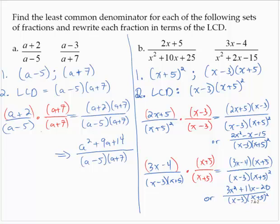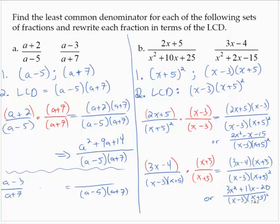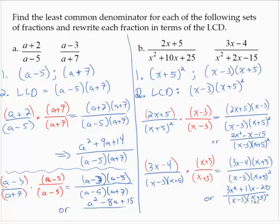I realized I forgot to do the second fraction in the earlier example. We had (a - 3) over (a + 7), and we need the denominator to be (a - 5)(a + 7). So the denominator is missing a factor of (a - 5), and that gives us (a - 3)(a - 5) in the numerator, or a² - 8a + 15, over (a - 5)(a + 7).